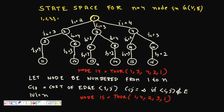Node 14 represents a tour: start from node 1, go to node 3, then to node 4, then to node 2, and back to 1. Node 15 represents: start from node 1, go to node 4 (i₁=4), from 4 go to node 2 (i₂=2), from 2 go to node 3 (i₃=3), and then back to node 1.